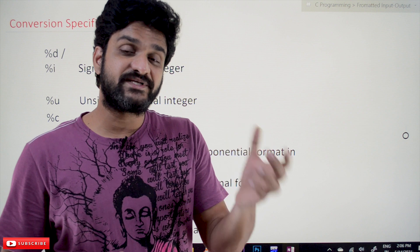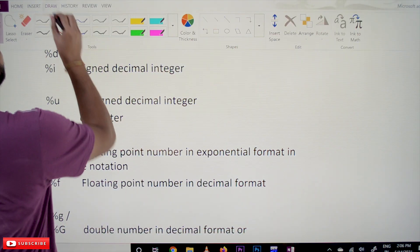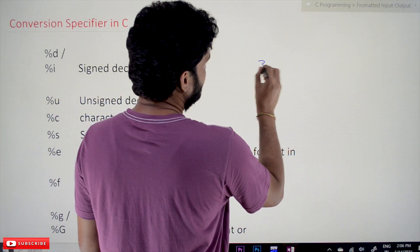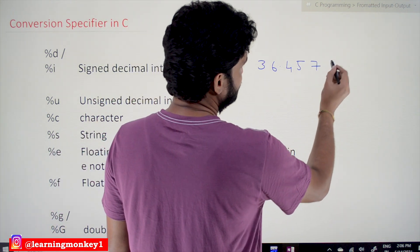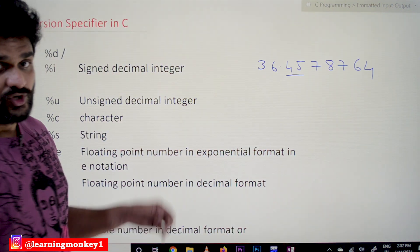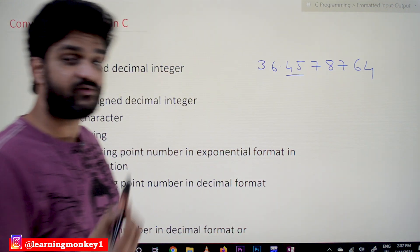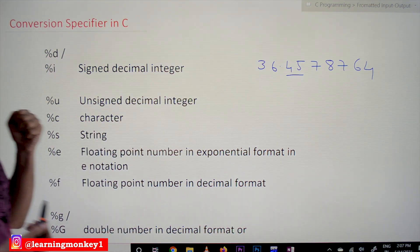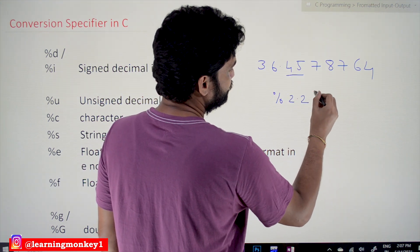With conversion specifiers we can also give formatting information. What is this formatting information? For example, if you want integers or floating point numbers to be displayed in a specific way — for example, if you have 36.45 or a bigger number like 8764, and you want to round it off to two digits after the decimal point and not display all digits — for this, C allows us to provide formatting information before the symbol for the conversion specifier. For example, you can specify it as %2.2f.